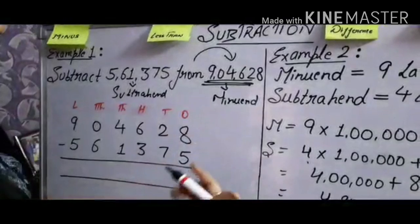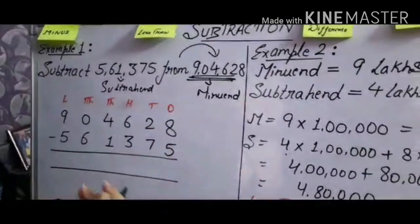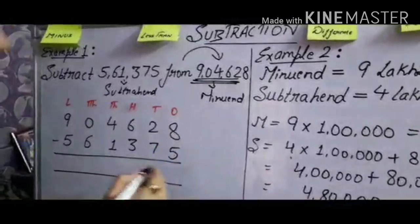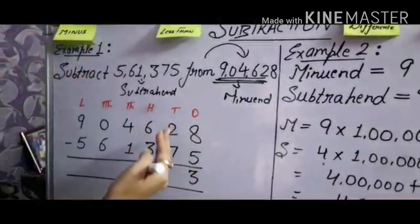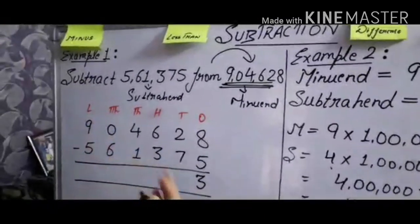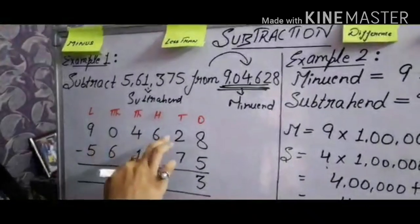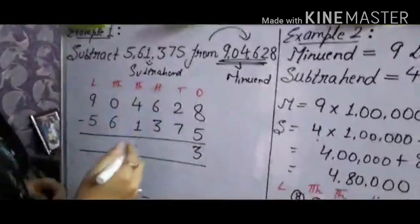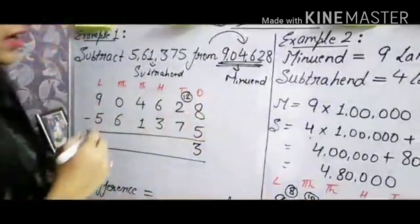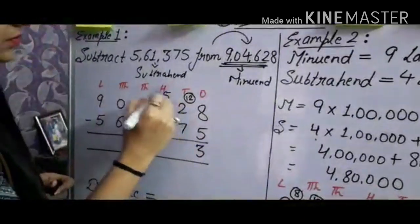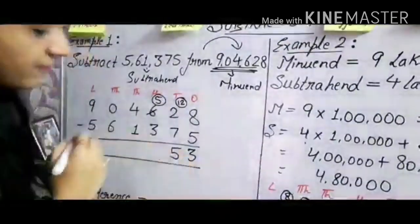Now we start subtraction. First, in the ones place: can we subtract 5 from 8? Yes, because 8 is the larger number. So 8 minus 5 gives you 3. Next, in the tens place: can we subtract 7 from 2? No, because 2 is smaller. So we have to take a borrow — this becomes 12 and the hundreds digit becomes 5. Now 12 minus 7 gives you 5.